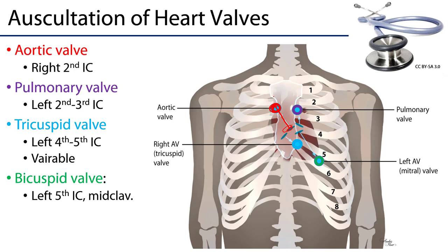For the aortic valve, it's the right second intercostal space right at the sternal border. For the pulmonary valve, it would be the left second intercostal space at the sternal border, though you can also try the third intercostal space. Note that intercostal spaces are named for the ribs above them, so the second intercostal space is between the second and third ribs, and the third intercostal space is between the third and fourth.